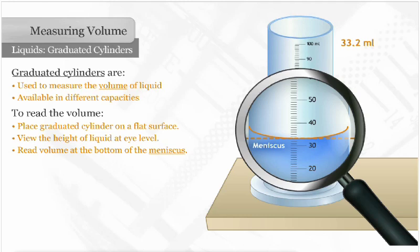Since the volume can be read to one-tenth of one milliliter, two people may read the same measurement and record different answers. One person may record the volume of this liquid as 33 and one-tenth milliliters, and another may record 33 and three-tenths milliliters. According to the reading error, both are correct.